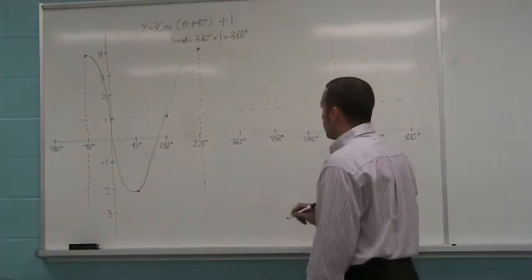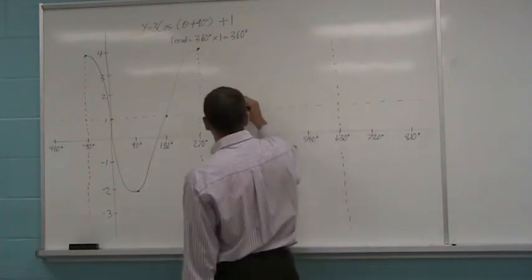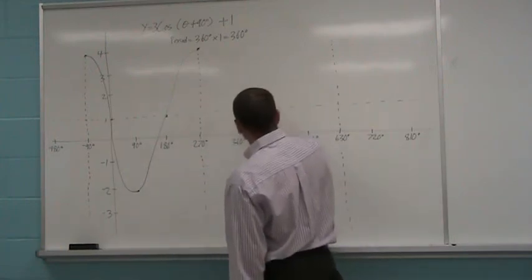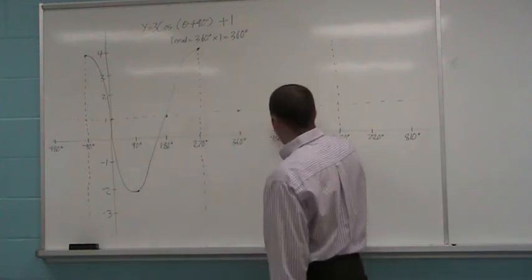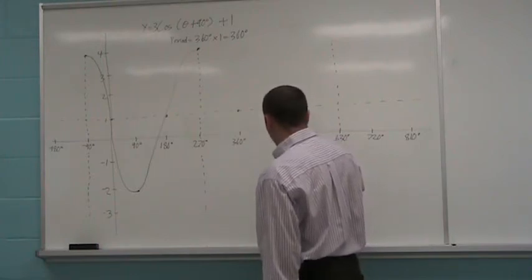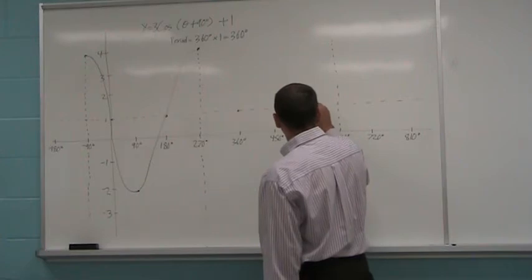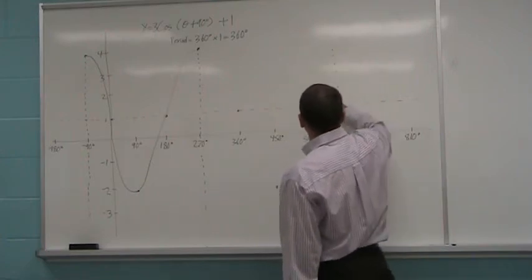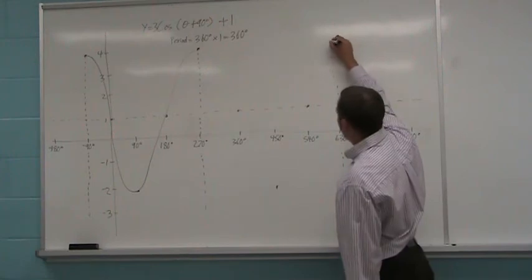Okay, and again, draw the cos wave. So it starts up here, 90 degrees later, it's on the sinusoidal axis. Another 90 degrees later, I'm down here at my local minimum. And then back on the sinusoidal axis, and then finally finishing on a maximum again.